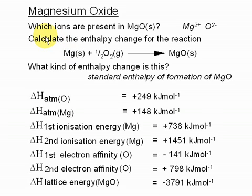First of all, it says, which ions are present in magnesium oxide? And the answer is Mg2+ and O2-, because magnesium is in group 2 and oxygen is in group 6.